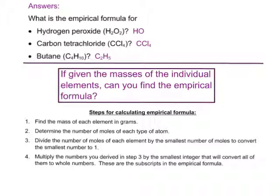Now that you know how to write the empirical formula when given the molecular formula, let's challenge ourselves with another objective. If we are given the mass of each of the individual elements, can we find the empirical formula? It's a little more difficult. The basic steps are: first, find the mass of each element in grams and determine the number of moles of each type of atom. Then divide the number of moles of each element by the smallest number of moles to convert that smallest number to 1. Finally, multiply the numbers as needed to obtain whole numbers in the formula.